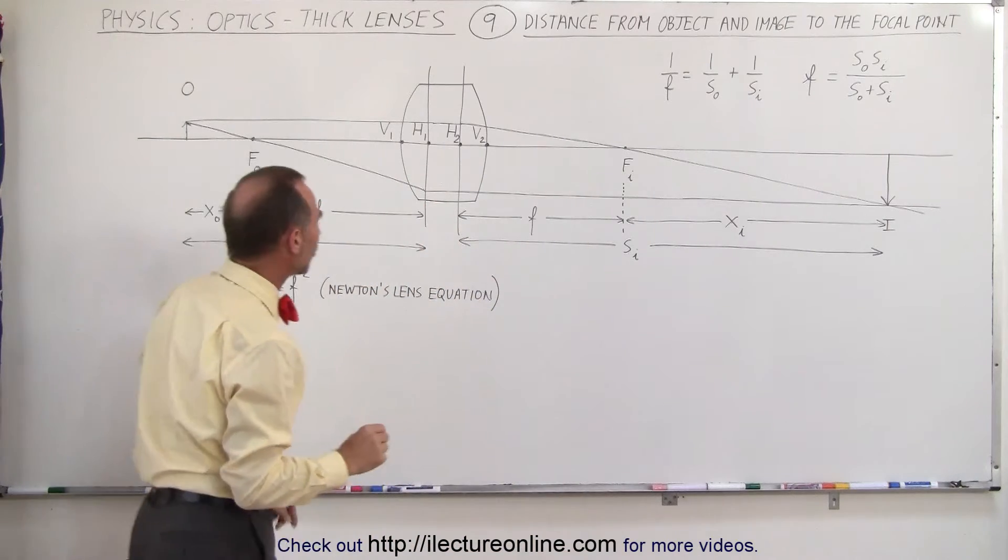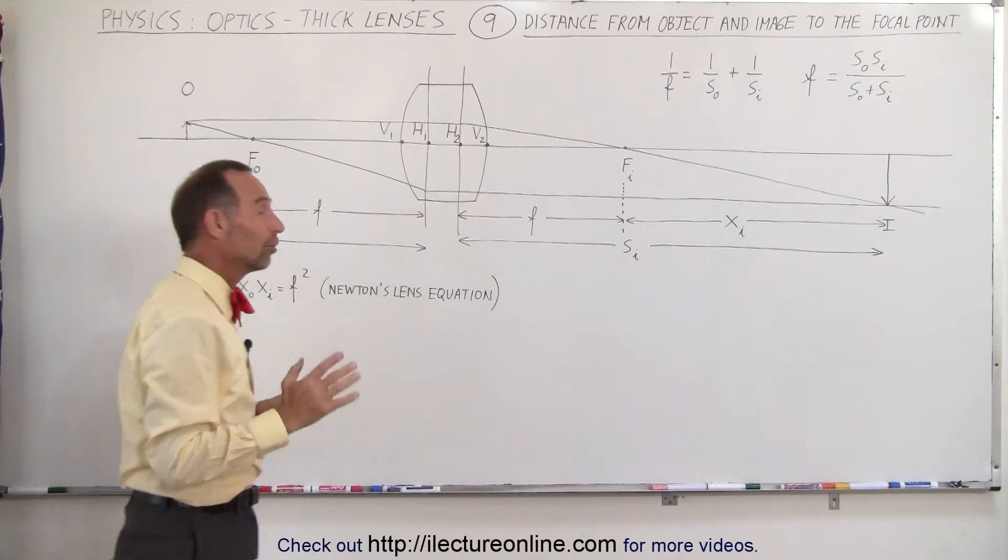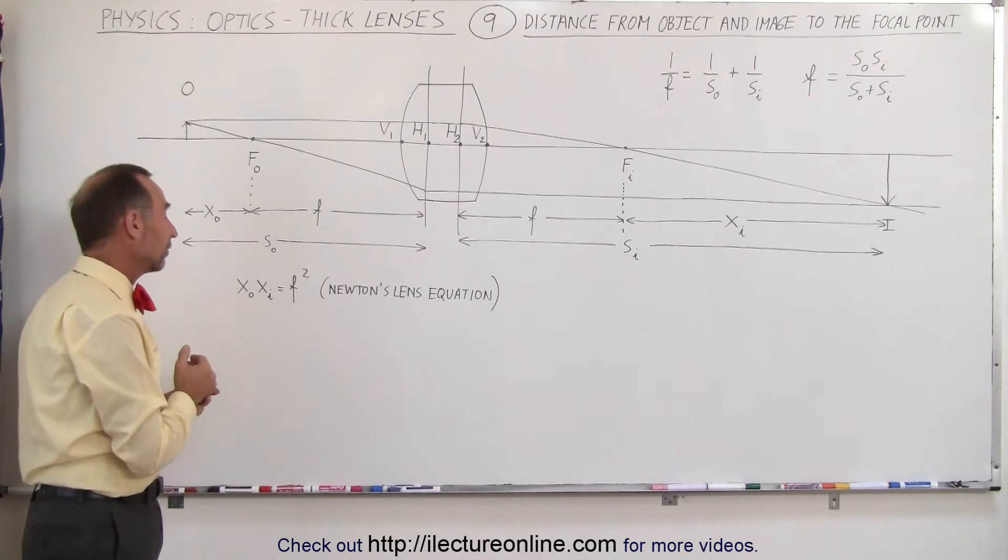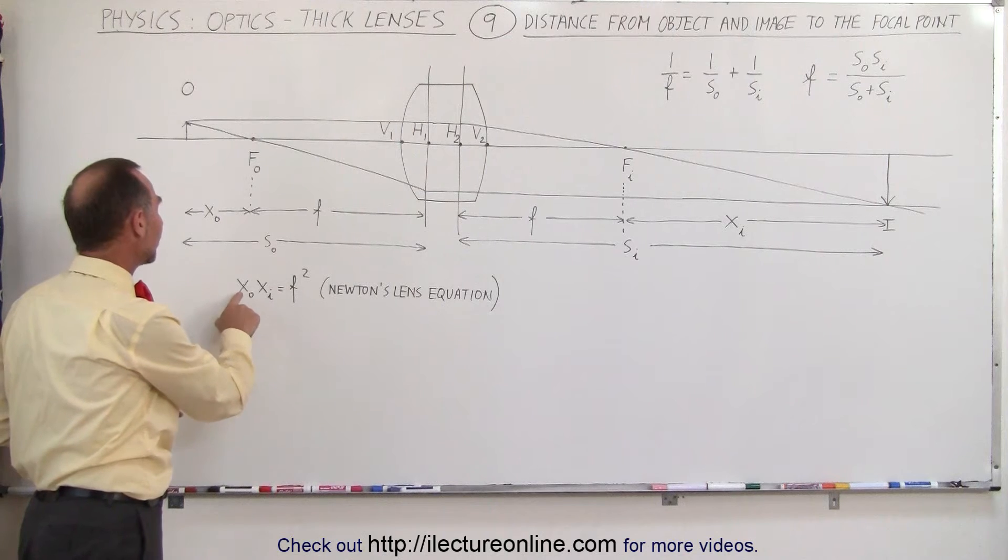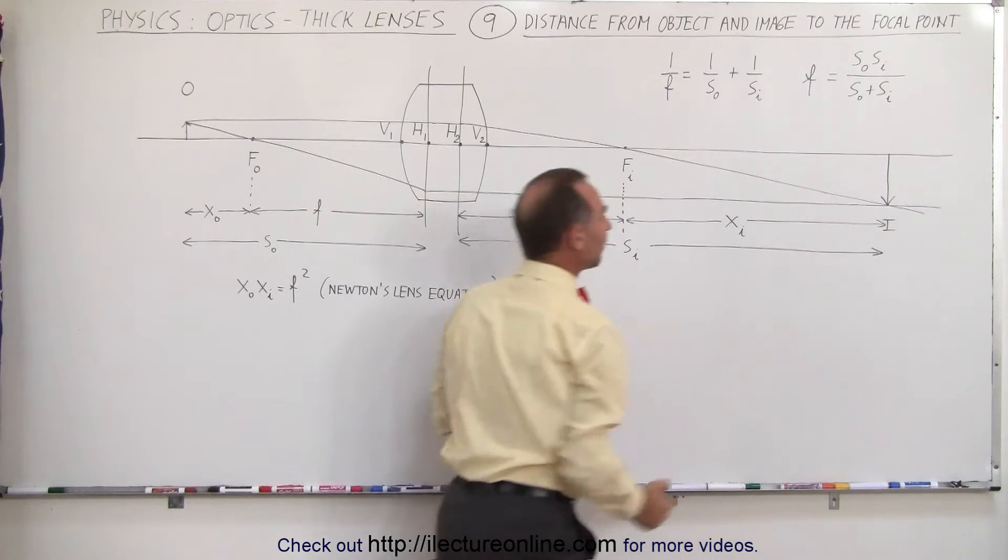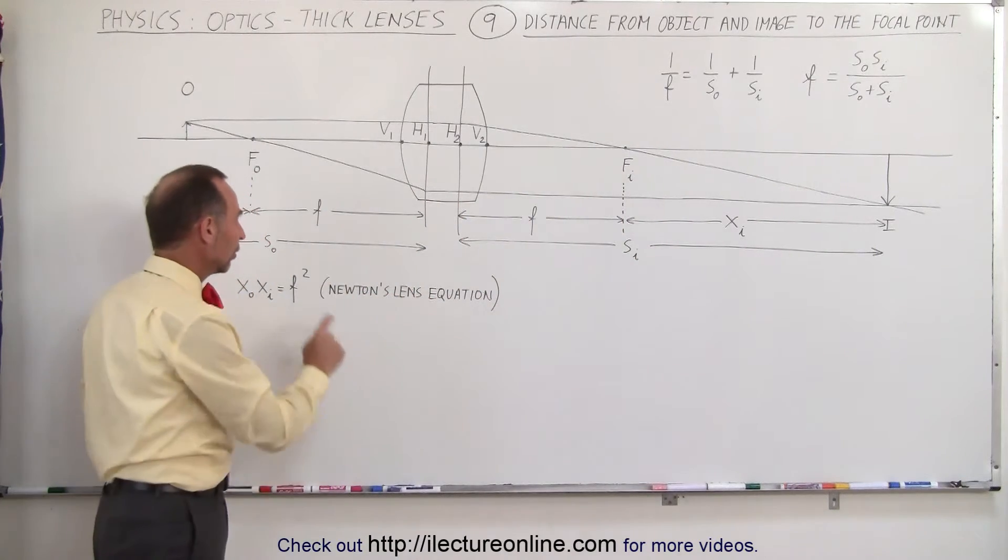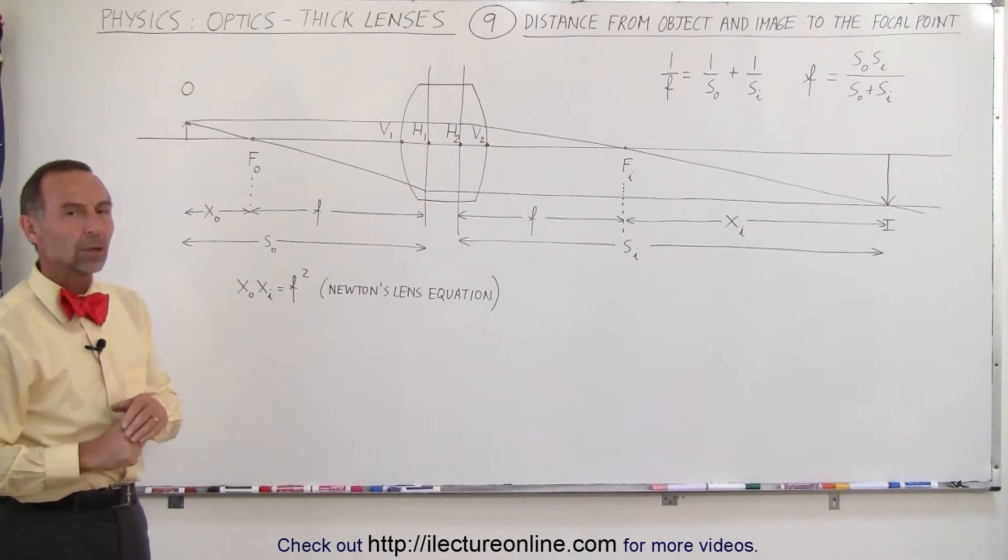There's an interesting relationship between these two distances and the focal length of the lens. It turns out that Newton discovered, through some work, through some geometry here, that the product of x sub o times x sub i, this distance times this distance equals f squared, the effective focal length squared. Wow! How did he do that?